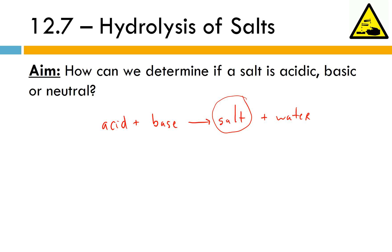The salt, based on how it was formed — in other words, which acid and base were used to neutralize each other — can be acidic, basic, or neutral itself. So I could take this salt, dissolve it in water, and when I measure the pH, the pH might actually not be neutral. It could be acidic or basic.